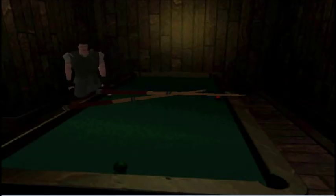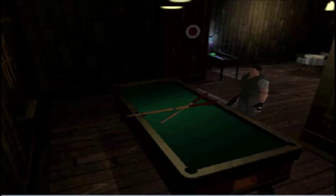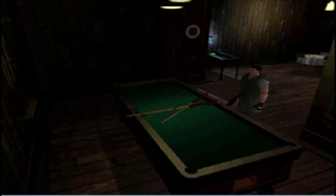All those numbers represent the numbers on a clock — three, nine, six, or nine, six, three. The only thing is this clock is upside down and laid flat.